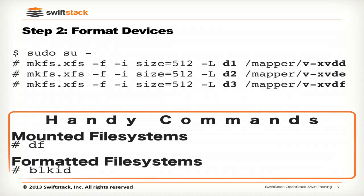We're using XFS because in a lot of testing and large-scale deployments it happens to be exceptionally good for failure handling and also handling very large numbers of inodes. It's quite performant as it gets more and more data stored in it. When we format, there are some options we pass into the format commands. One important option is the inode size — I generally recommend using 512 inodes. This is where all of the metadata for your objects is stored, providing a nice balance to store metadata without having to go into new extents on the disk, giving you lower overhead.